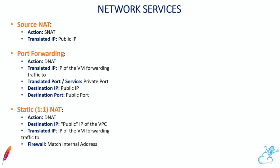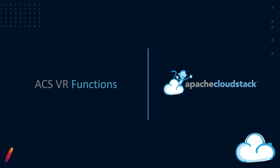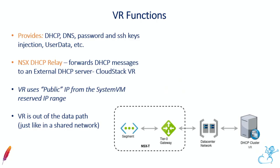These are all the functions that we have implemented — basically the same as what exists now. If you use this, it looks the same; the UI doesn't change. We did keep the virtual router. In an NSX network, the CloudStack VR works pretty much the same way as in a shared network — it's a helper VM doing DHCP, DNS, user data, everything. This ensures that any new features we add to the virtual router that are not routing-specific will also be compatible.